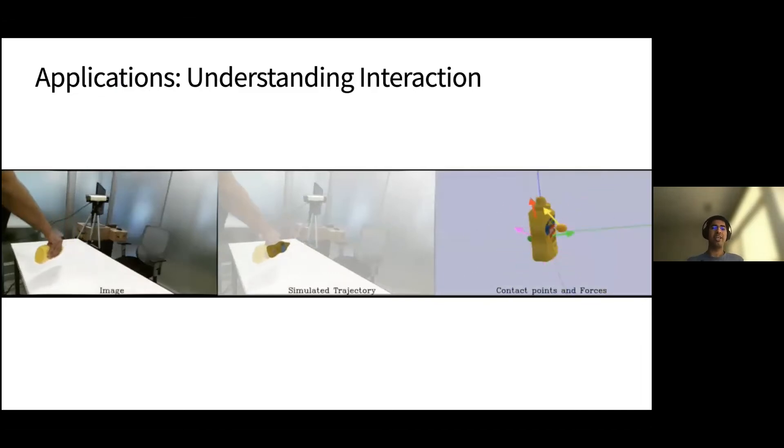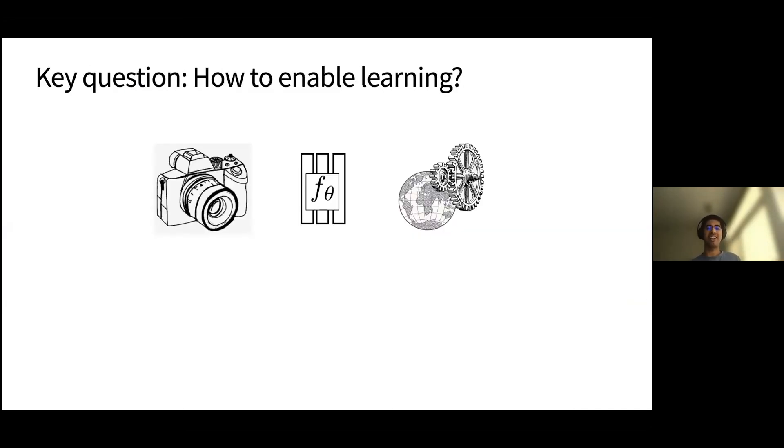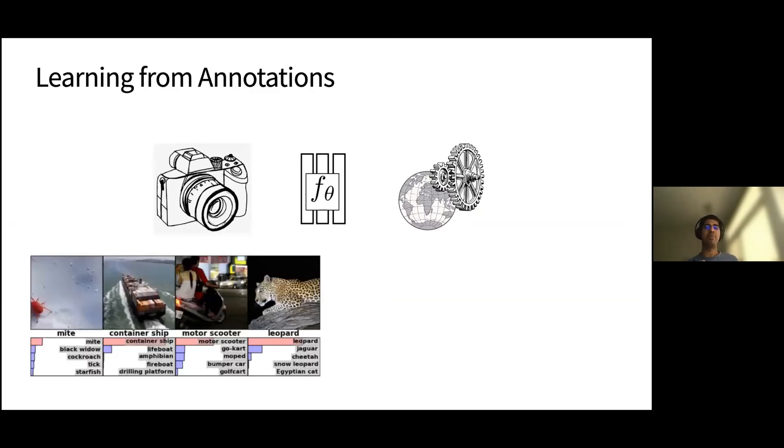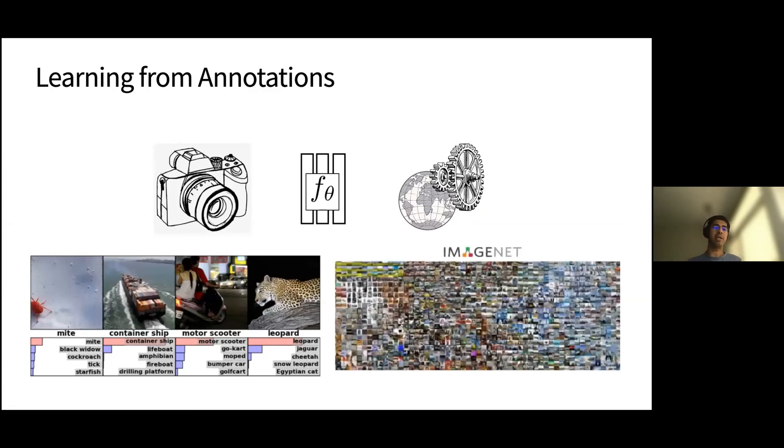And to enable all these applications, one key question that my research looks at is how do we enable learning in these systems? And one very popular common answer in the computer vision community is to just learn from annotations, where we just provide a system millions of examples of the task that it's trying to do. For example, if it's trying to classify images, we give it a million labeled images that tell it that this image is a mite, this image is a leopard, and it learns from these annotations.